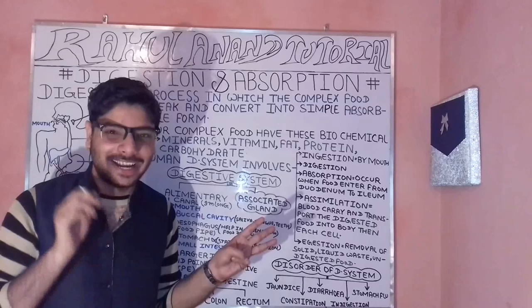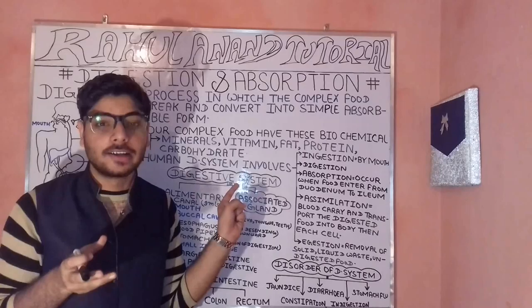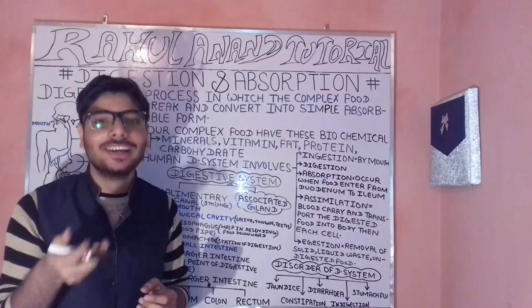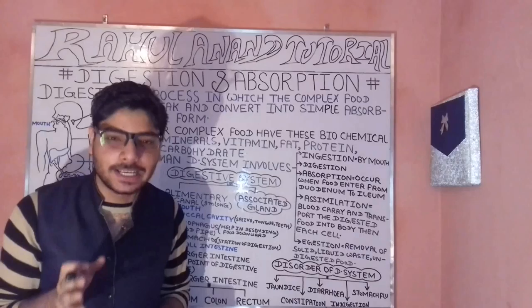Carbohydrates are further divided into three broad categories: monosaccharides, polysaccharides, and oligosaccharides. Monosaccharides are the simplest form — when the complex sugar is not broken down further into simpler ones, it comes under monosaccharides.